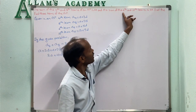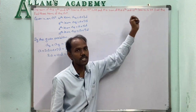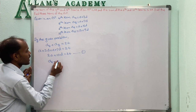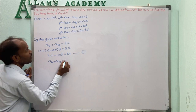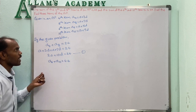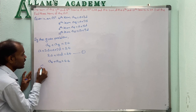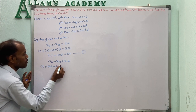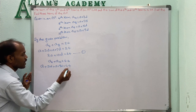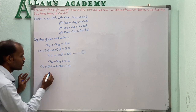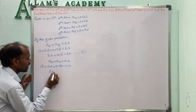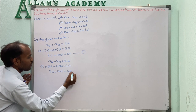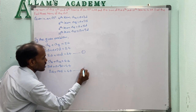The sixth term A6 = A + 5D and tenth term A10 = A + 9D. Their sum: A6 + A10 = 2A + 14D = 44. This is equation 2.